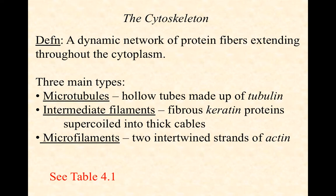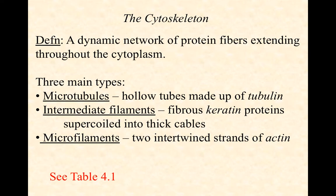There are three main types of these protein fibers. The first are called microtubules — the largest of all. They are hollow tubes made up of a protein called tubulin, like a straw. Intermediate filaments are intermediate in size, a little smaller than microtubules, primarily made of a protein called keratin — fibrous keratin proteins supercoiled into thick cables twisted around each other. Then microfilaments, also called actin filaments, are strands of the protein actin wound around one another — the smallest and thinnest of the three.